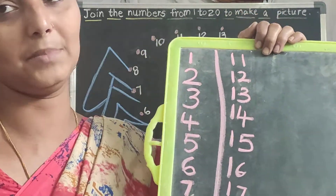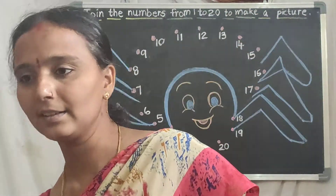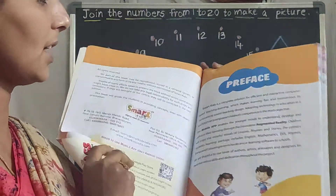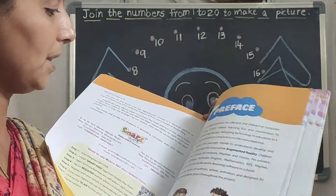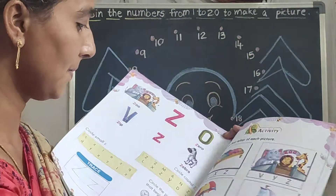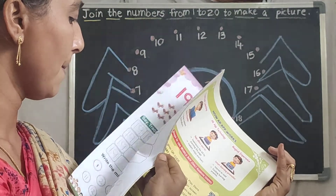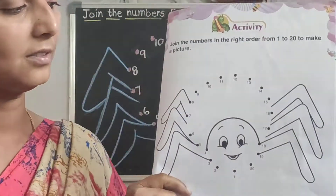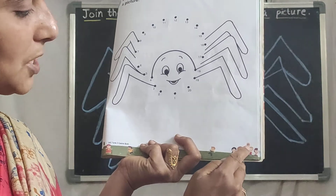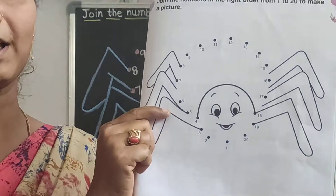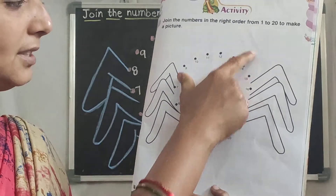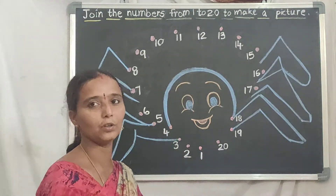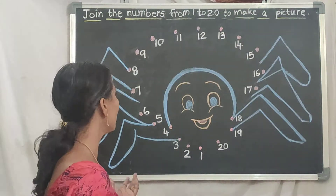Practice numbers 1 to 20. After completing that, all of you take your course book Term 2. Here you can see the activity page — open page number 51. This is the activity page and the same page I have drawn on the board. So all of you look here — what should you do here?